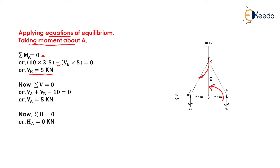Applying the next equilibrium condition — summation of vertical forces equals zero — we write VA plus VB, both acting upward, minus 10 acting downward, equals zero. Putting the value of VB equal to 5, we get VA equals 5 kilo Newtons.